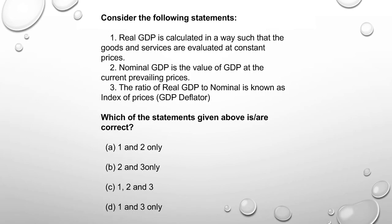Real GDP is calculated such that goods and services are evaluated at constant prices — correct. Nominal GDP is the value of GDP at current prevailing prices — correct. The ratio of nominal GDP to real GDP is known as the GDP deflator — statements 1 and 2 are correct, option A.